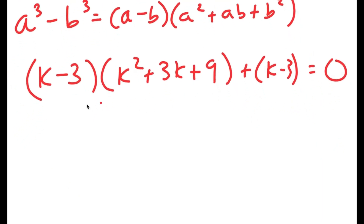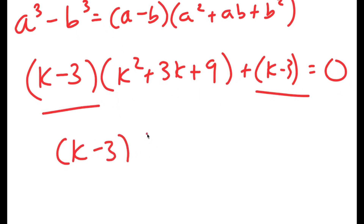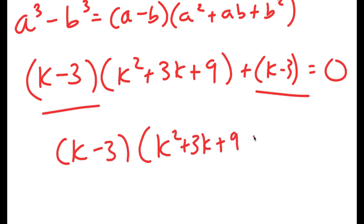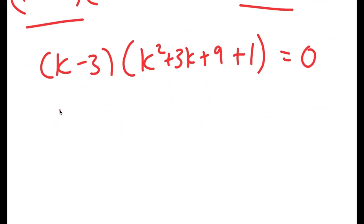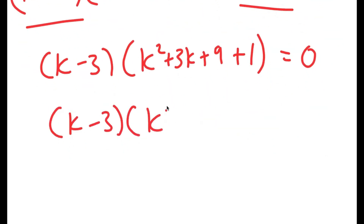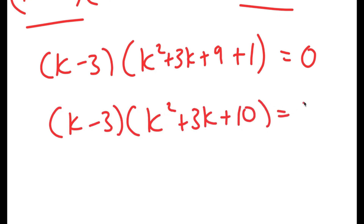So now, because both of these terms have k minus 3 in them, I can factor out k minus 3. So I get k minus 3 times k squared plus 3k plus 9 plus 1, because k minus 3 divided by k minus 3 is 1. This turns into k minus 3 times k squared plus 3k plus 10 is equal to 0.